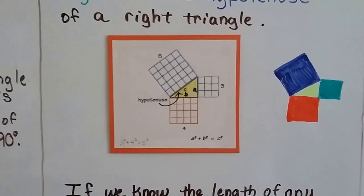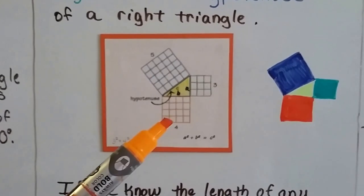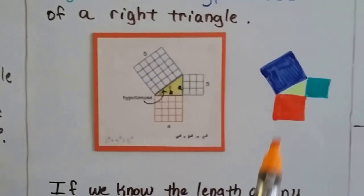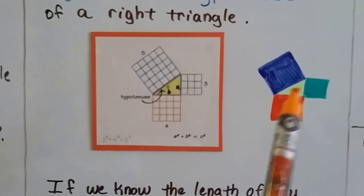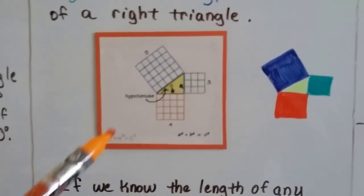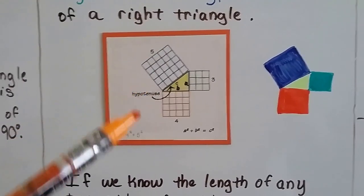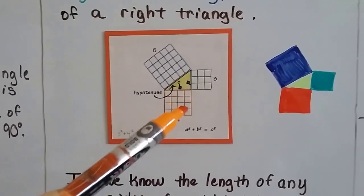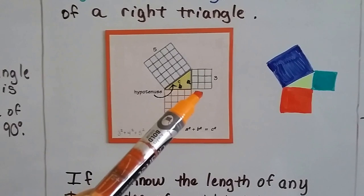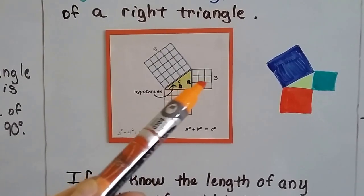And if we put perfect squares around each of the sides of this right triangle, just like this, with the yellow triangle in the center, we can see that 5 times 5 is 25, 4 times 4 would be 16 for the area of this one, and 3 times 3 would be the area of this one, right?